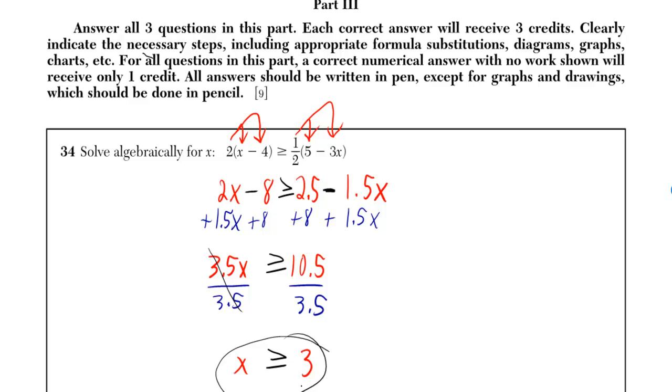Part 3, y'all. Solve algebraically for x: 2 times x minus 4 is greater than or equal to 1 half of 5 minus 3x.